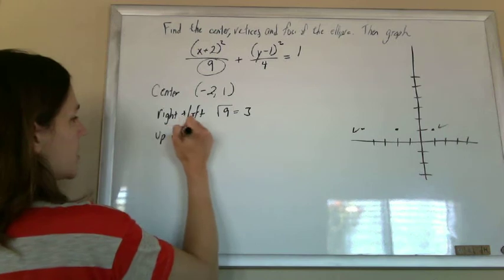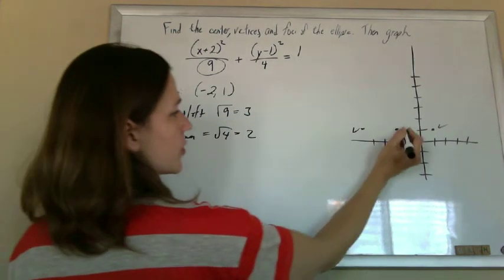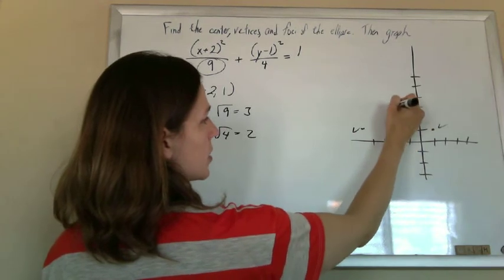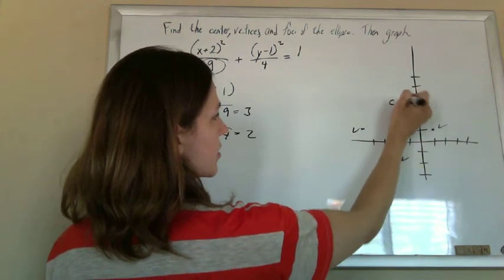So I know I'm going to go up and down, only the square root of 4, which is 2. So from the center, go up 2 and down 2. And if they had asked for this, these are co-vertices.